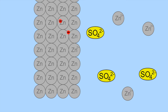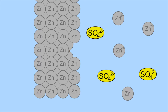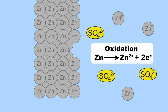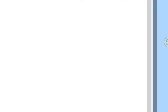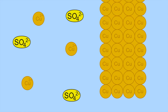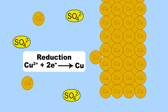At the anode, zinc atoms give up, or lose, two valence electrons to form positively charged zinc ions. This loss of electrons is known as oxidation. These electrons then travel through the wire to the cathode, where positively charged copper ions in solution gain two electrons to form atoms of metallic copper. This gain of electrons is known as reduction.